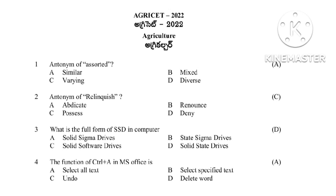Question 1: Antonym of 'Assorted.' Assorted means similar, mixed, varying, or diverse. The antonym of Assorted is the opposite word. The options are similar, mixed, varying, and diverse. The answer is A, similar.